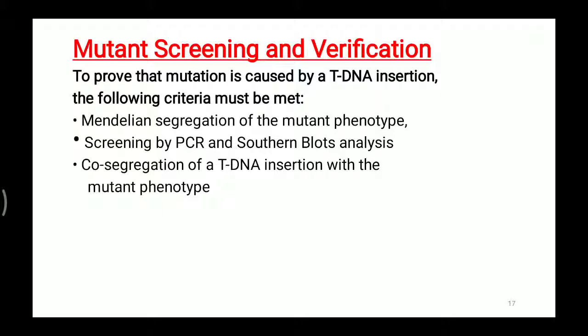Mutant screening: how we are going to screen and verify the mutants. To prove mutation is caused by tDNA insertion, the following criteria should be met. First, Mendelian segregation of the mutant phenotype — the mutation should be inherited to the progenies and must follow Mendelian segregation. We can also screen by PCR and Southern blotting analysis. Additionally, co-segregation of the tDNA insertion with the mutant phenotype — whatever tDNA we insert should be transferred and segregate with the mutant phenotype.